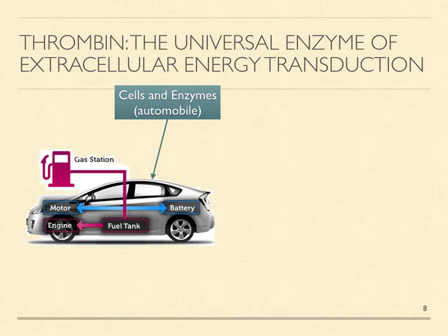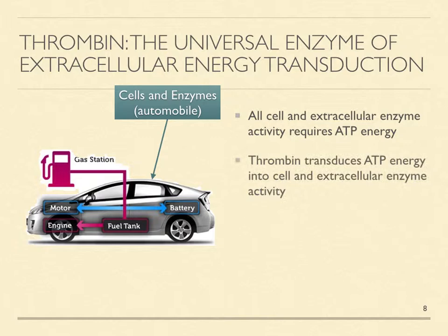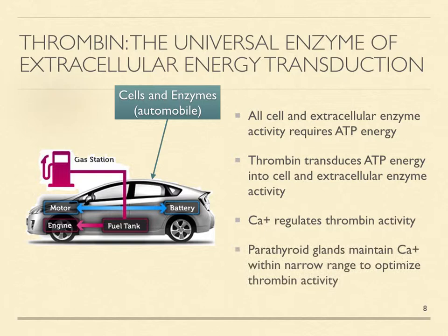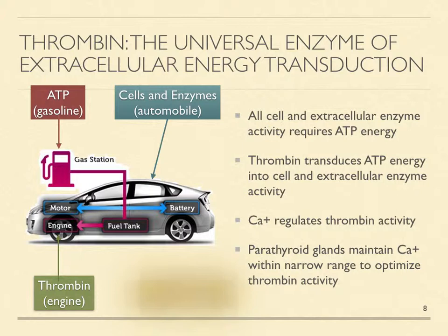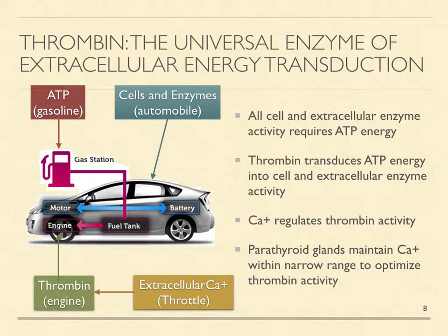Thrombin is the most important of the three MSM products. I call thrombin the universal enzyme of extracellular enzyme transduction. As gasoline energizes automobile motion and ATP energizes cells and extracellular enzymes, thrombin converts ATP into cell and extracellular enzyme activity. As a throttle regulates engine power output, parathyroid glands regulate extracellular calcium within a narrow range to optimize thrombin activity, which explains why they are vital to life.